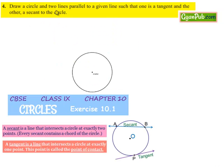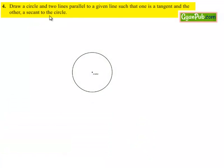Moving on to the fourth question: draw a circle and two lines parallel to a given line such that one is a tangent and the other a secant to the circle.